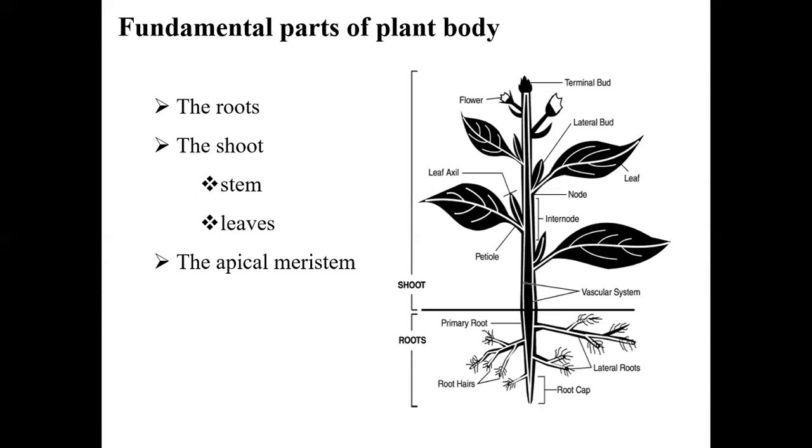Another major portion is the apical meristem, present at the tips of shoots and roots, which helps in the growth and extension of the plant. Meristematic portions have the ability to divide and grow.